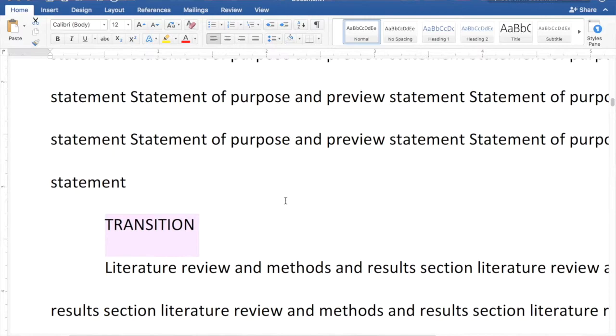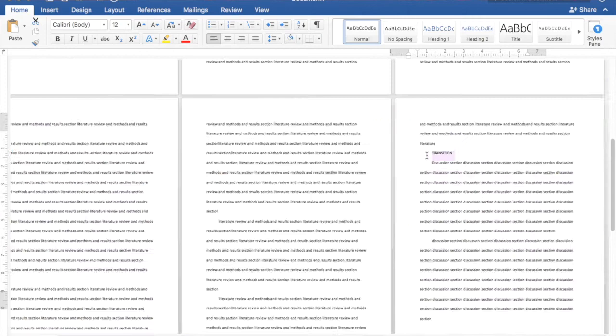Then, you should transition to the Literature Review and Methods section. About two to five pages, maybe, where you discuss your secondary research, describe your primary research methods, and share your results.